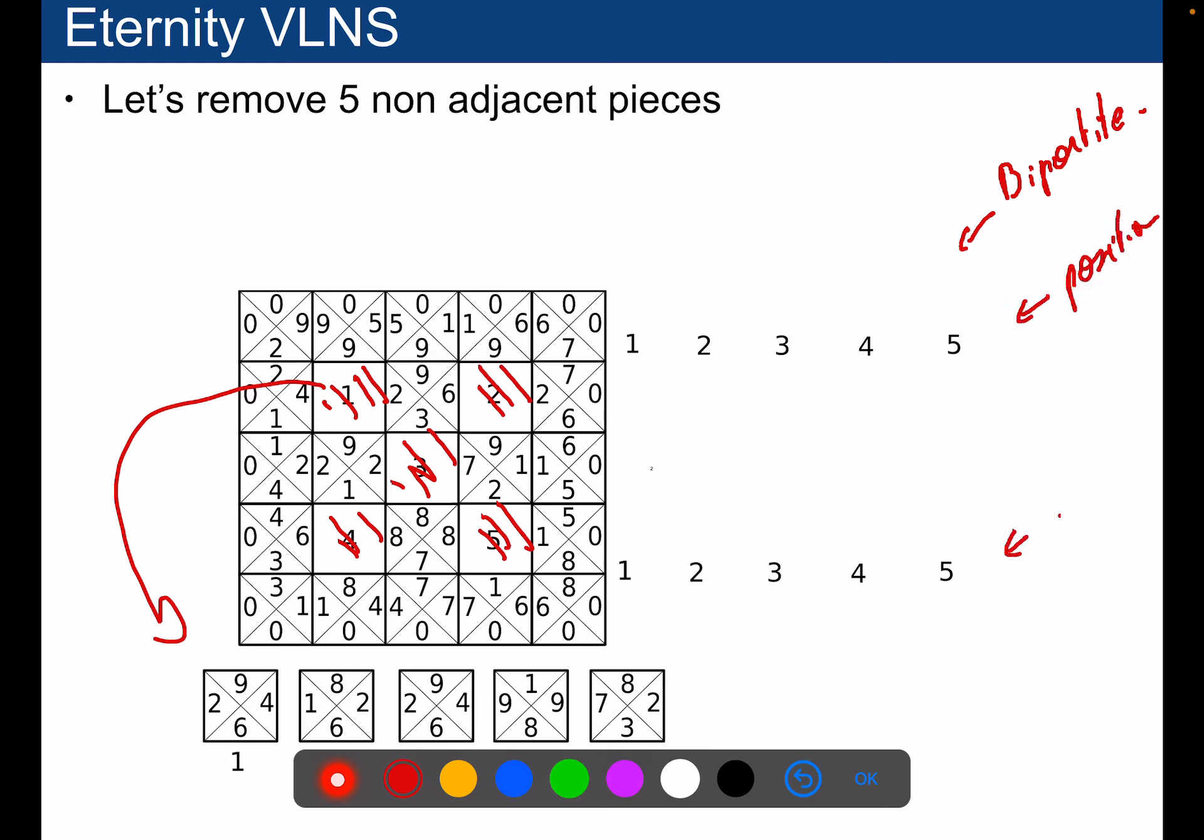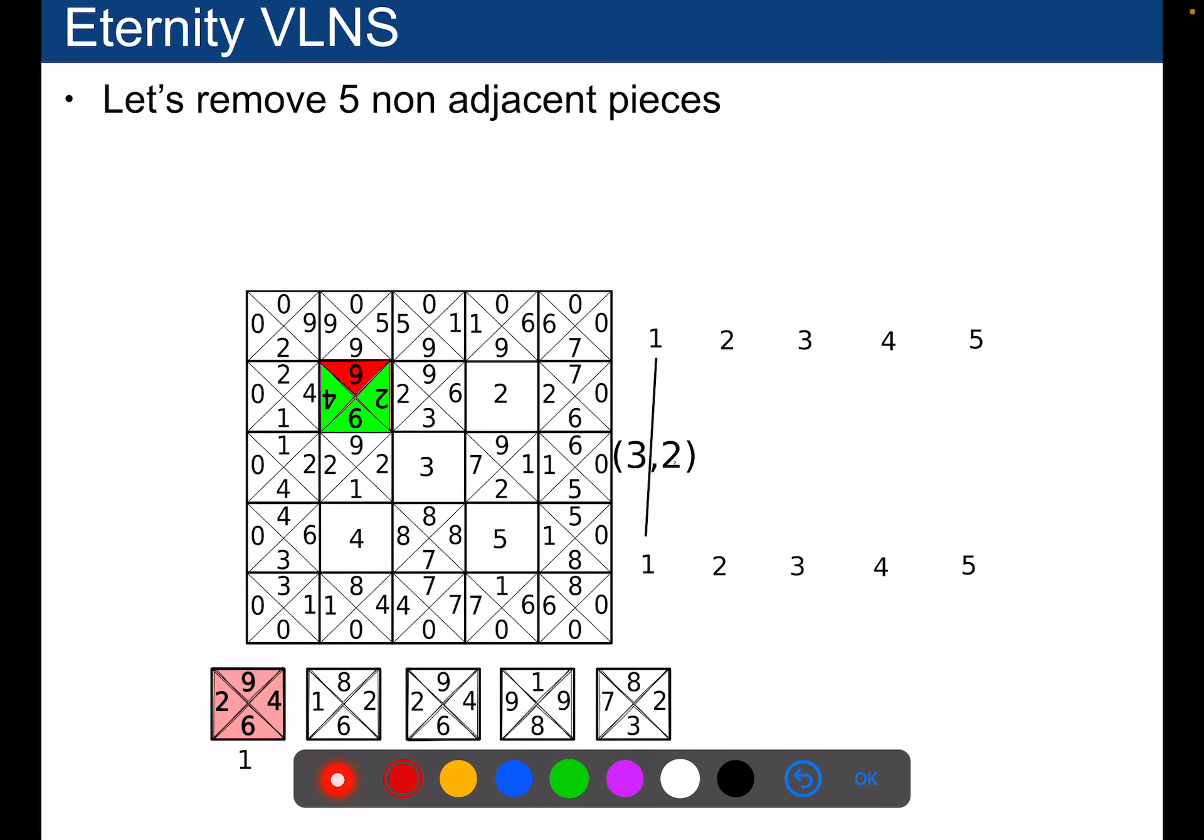I will compute for every pair of position to a piece the optimal rotation and the cost that would be induced if I would place that piece to that position with that rotation. So you have a bipartite graph with weights on the edges.